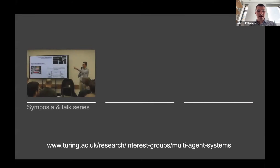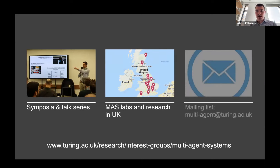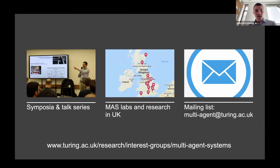Based on that, we have the symposium which led to this online talk series. All the talks end up on the YouTube channel and there's also the website on the Turing page. We have a map on Google Maps where we pinpoint all the major labs in the UK that work in Multi-Agent Systems Research, including links and topic areas. If you have a lab that specializes in this space and you'd like to be represented, please get in touch. We also have a mailing list for Multi-Agent Systems related opportunities, focused on activities within the UK.